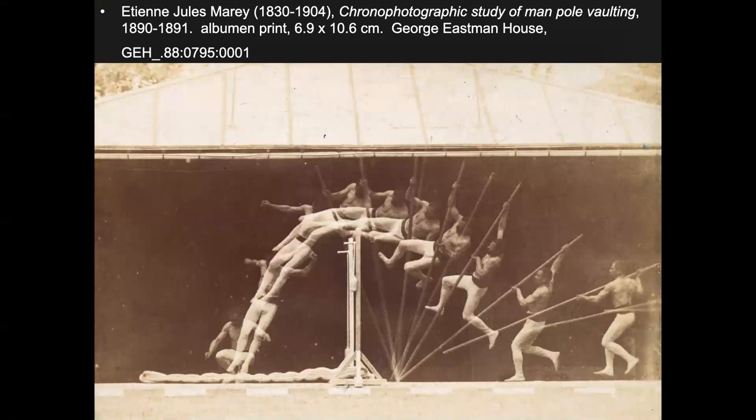Another photographer who did similar work was Marey, but with a different approach. He had one camera set up like a machine gun and printed everything on one piece of paper — he called it chronophotography, meaning 'time photography.' With a pole vaulter, you can see each element of the vault captured in one image. This allowed scientists to see motion almost like a graph.